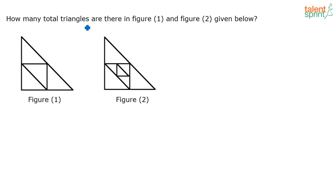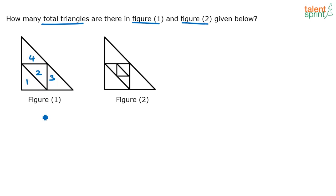The question asks how many total triangles are there in figure 1 and figure 2 given below. For figure 1, if you number the parts 1, 2, 3, 4 — each of those is a triangle, and then 1, 2, 3, 4 together form one more triangle. So total 5 triangles in figure 1.